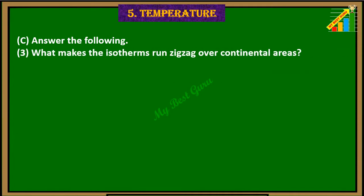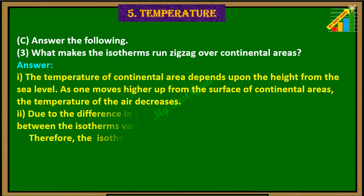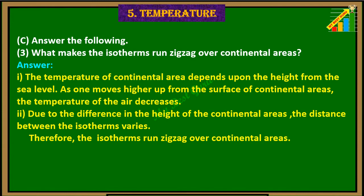3. What makes the isotherms run zigzag over continental areas? Answer: 1. The temperature of continental areas depends upon the height from the sea level. As one moves higher up from the surface of continental areas, the temperature of the air decreases. Due to the difference in the height of the continental areas, the distance between the isotherms varies. Therefore, the isotherms run zigzag over continental areas.